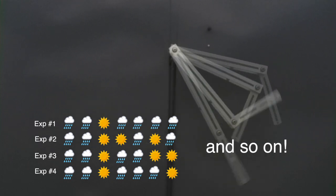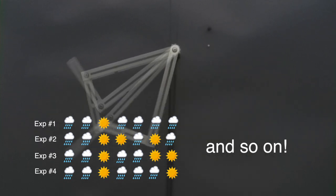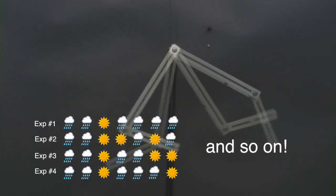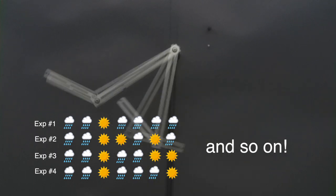This amplification of small changes is called chaos, and it's found everywhere, in how planets move, how people interact, and in the weather.